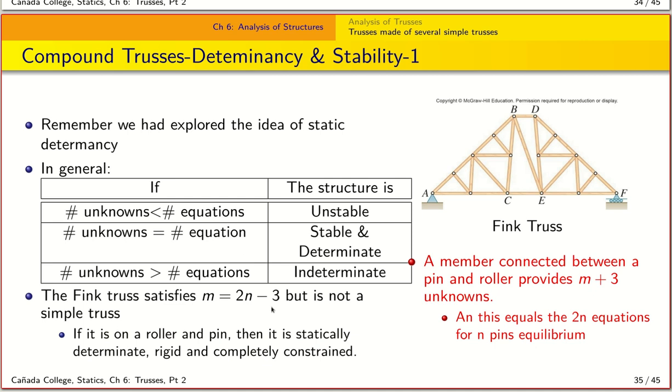The reason for that can be further understood by thinking about the fact that our rollers and the pin, in this case the F and the A, they add three unknowns. So if you have M members in this section, we have M plus 3 unknown forces. Remember, each member gives one unknown force because of Newton's third law. So if we know the force from one side, we know the force from the other side.